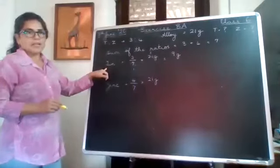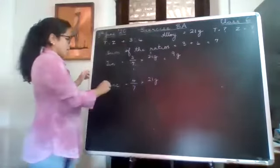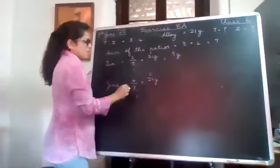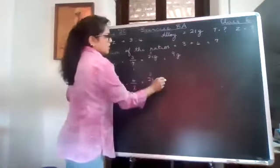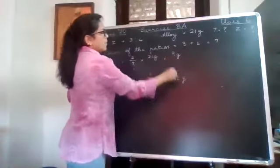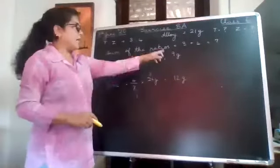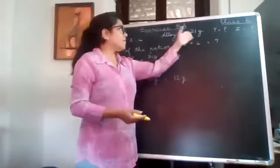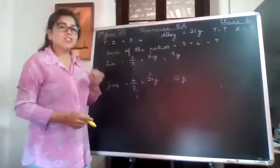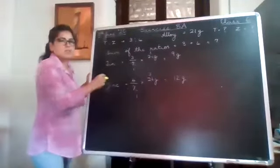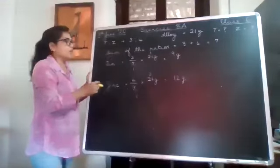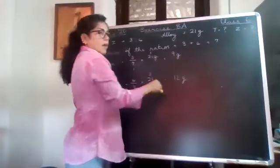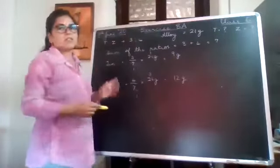And for zinc, 4/7 of 21 - seven threes are 21, so we get 4 multiplied by 3 which is 12 grams. Now when you add up both of these, 9 and 12, you are supposed to get 21. So 9 plus 12 is 21. This is one way to check if your division has been done properly. The fractions are right, and if you add these up after dividing, you should get the total.